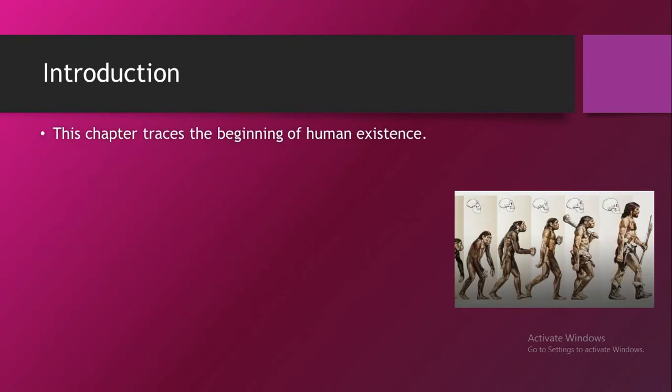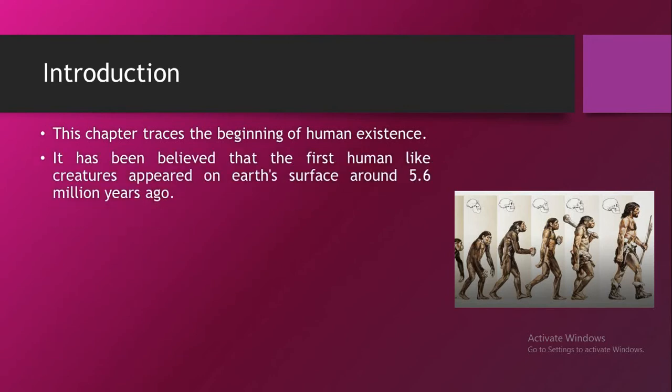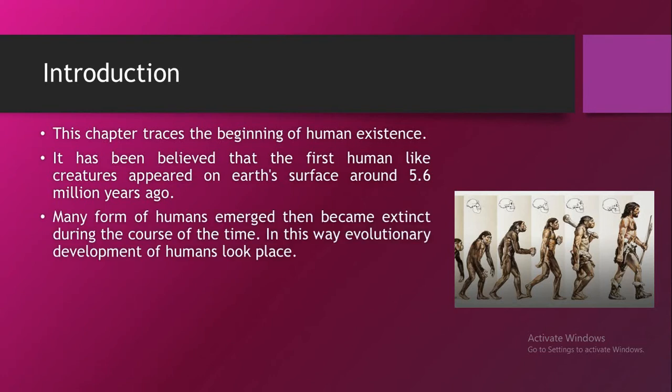This chapter traces the beginning of human existence. We go back into history to find out the origin of human existence. It has been believed that the first human-like creatures appeared on earth's surface around 5.6 million years ago. Many forms of humans emerged, then became extinct during the course of time. In this way, the evolutionary development of humans took place on earth.